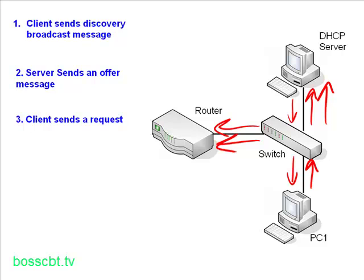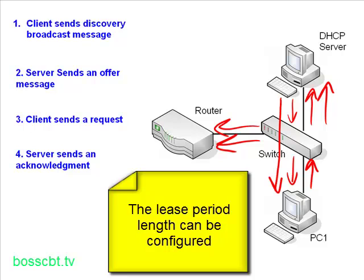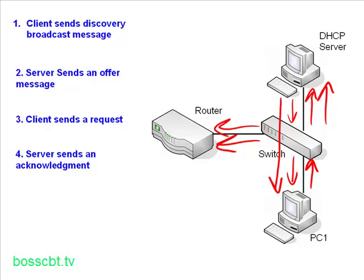That brings us to the fourth and final step: the server sends an acknowledgement back to the PC. Inside this acknowledgement is additional information about the IP allocation, including something called a lease period, as well as the default gateway, DNS server, IP subnet mask — all of that is contained within the acknowledgement. Regarding the lease period: when you are allocated an IP, it's not forever, although it can be. Lease periods can be configured to any duration. By default on Cisco devices they are set to one day — 24 hours. When the lease period is over, the DHCP server takes that IP back and marks it as available.